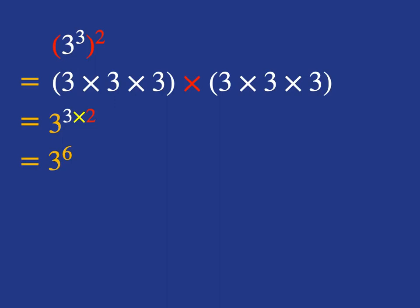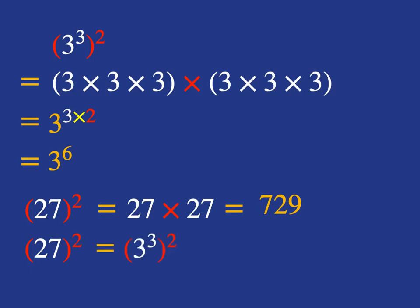Now, take a look at this. What's 27 squared? It's 27 times 27. You work that out, you'll get 729. But you also know that 27 is equal to 3 cubed. So we can replace that 27 by a 3 cubed. So we've got 3 cubed squared.